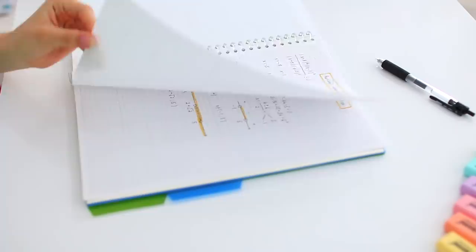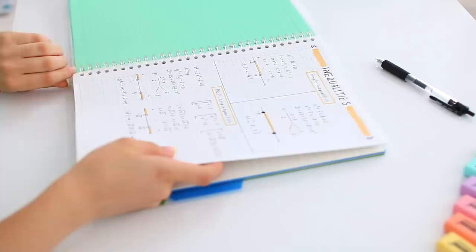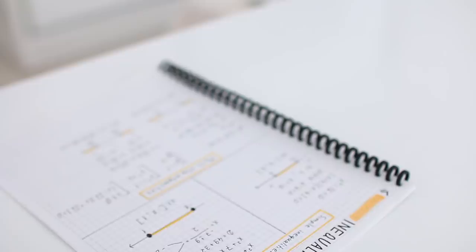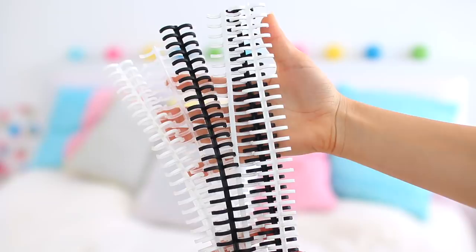As you're probably able to see, this binder notebook is quite slim, so there's no way it can fit all of my notes. So every time I'm done with a chapter or a topic that I no longer need in school, I'll take it out of my binder and then I'll use smart ring plastic bindings to make it into a notebook.